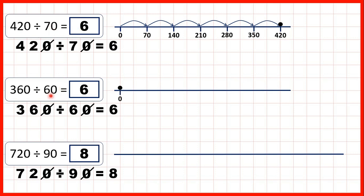Now here we're dividing by 60. So we can count up in steps of 60 until we reach 360. We have 60, 120, 180, 240, 300 and then the sixth multiple of 60 is 360.